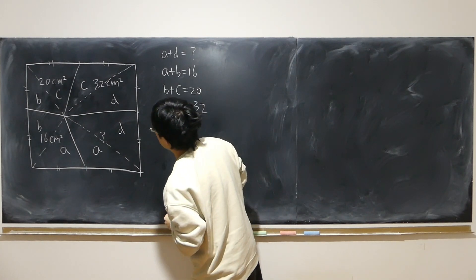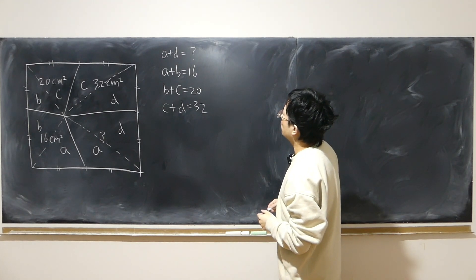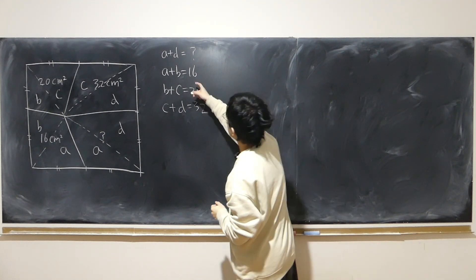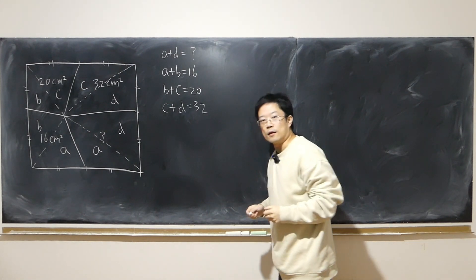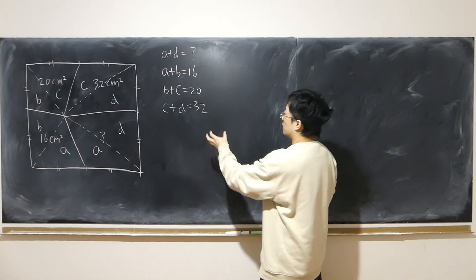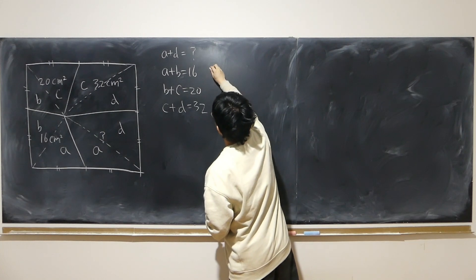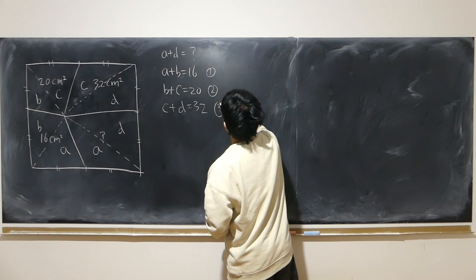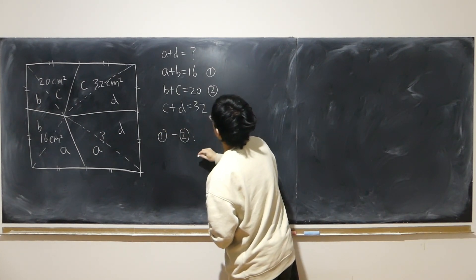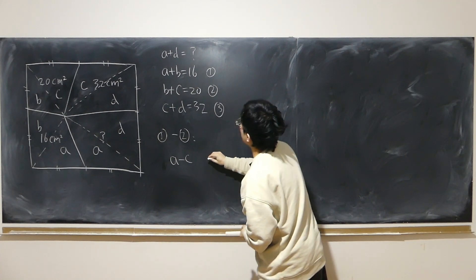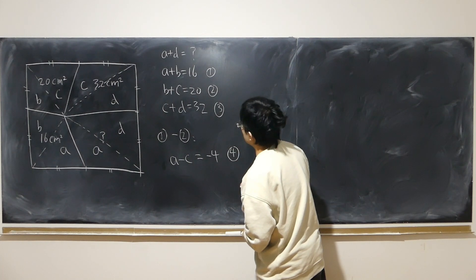So it looks like we have four unknowns but only three equations here. Usually we cannot expect to have a solution, but here I think we may. The reason is that first we use subtraction: equation 1 minus equation 2, and we immediately have A minus C equals negative 4. So that's equation 4.